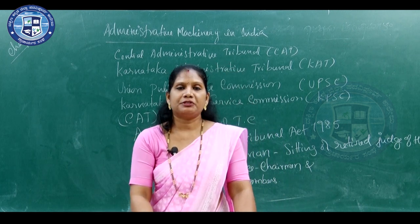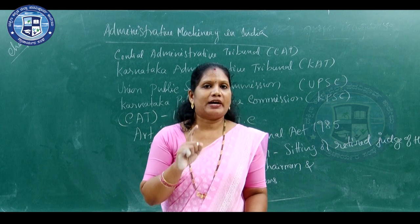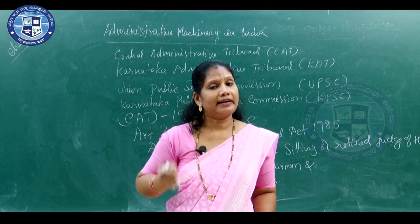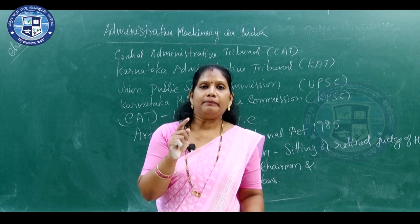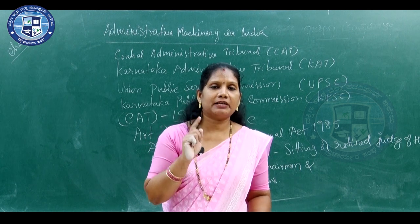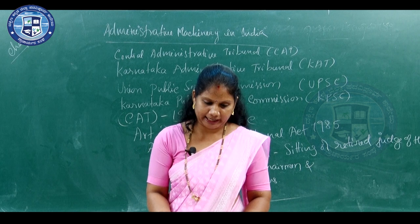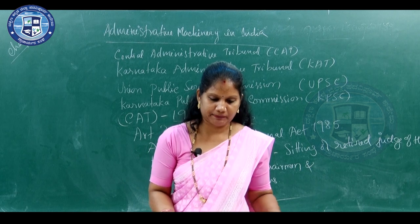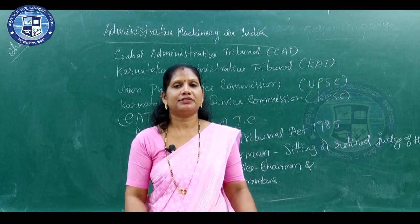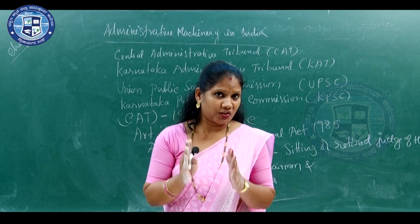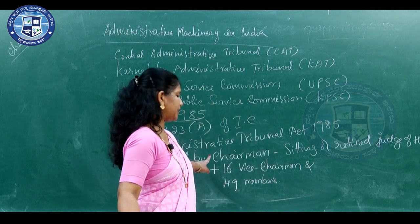The Central Administrative Tribunal consists of one chairman who has been a sitting or retired judge of a High Court, and besides the chairman, it consists of 16 vice chairmen and 49 members. The employees of the Central Administrative Tribunal discharge their duties under the guidance of the chairman.